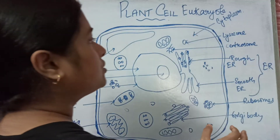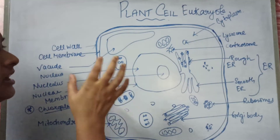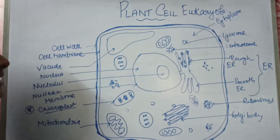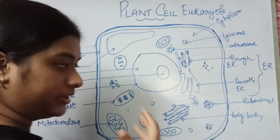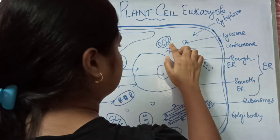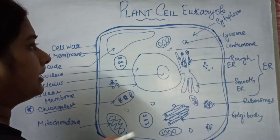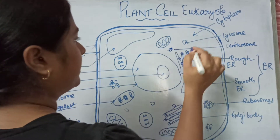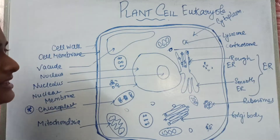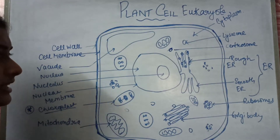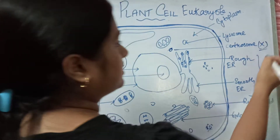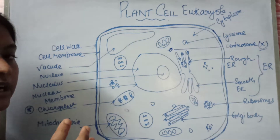Then comes the centrosome. In higher plants you will not find it, but the centrosome is present during the developmental stages of the plant or in lower classification groups. The centrosome helps during the cell division process, but its absence in higher plant cells is a distinguishing feature between the plant cell and the animal cell.